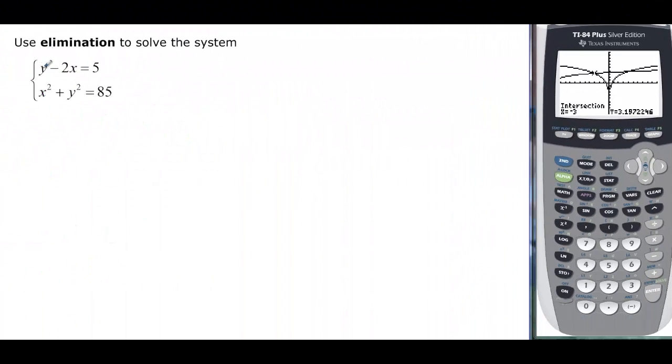Elimination, remember, we said we had to line up like things and have opposite coefficients on them. Well, this is a linear and this is a circle. So what are we going to do there? Well, let's look at it. I can solve this thing for y. So y is going to be equal to 5 + 2x. And I can solve this one for y² is equal to 85 - x².